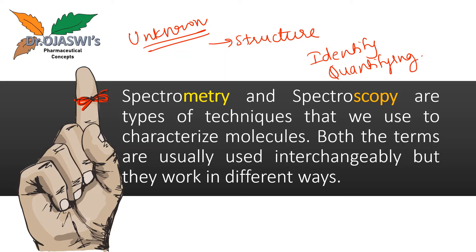When these techniques are used for identification, we call it qualitative analysis. When they are used to determine the concentration, we call it quantitative analysis. Now let us see what is the difference between spectrometry and spectroscopy. These two words are usually used interchangeably, but there is a slight difference in the way these two techniques work.